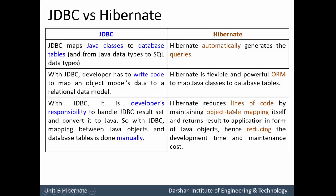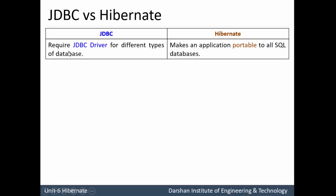With Hibernate it reduces lines of code by maintaining object-table mapping through the XML file itself, returning results to the application in the form of Java objects automatically — it is not the developer's responsibility. Hence it reduces development time as well as maintenance cost. Difference four: JDBC requires a specific driver for different types of databases, while Hibernate makes an application portable to all SQL databases. If a project is stored in multiple types of databases, Hibernate can easily handle this through HQL — Hibernate Query Language. The difference between HQL and SQL will be discussed in further videos.